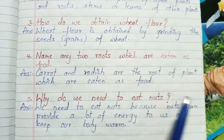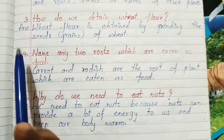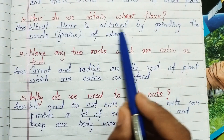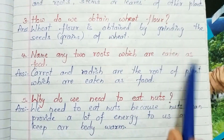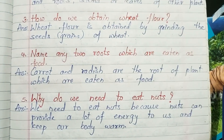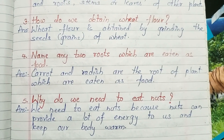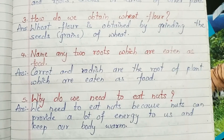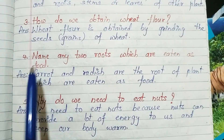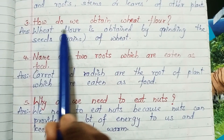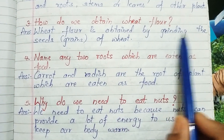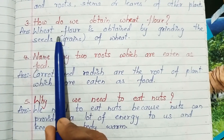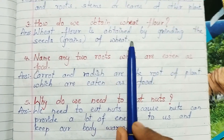Question number 3: how do we obtain wheat flour? Obviously by grinding them. Answer: wheat flour is obtained by grinding the seeds, or you can say grains, of wheat.